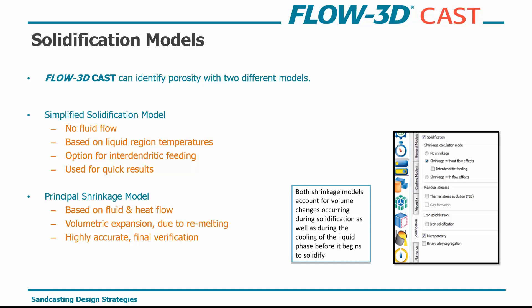Once we're happy with that design, we move to the principal shrinkage model. This is based on fluid and heat flow and takes into account volumetric expansion when material remelts within your mold. Both shrinkage models account for volume changes during solidification as well as during cooling of the liquid phase before it begins to solidify, so we do solve for liquid-to-liquid volume changes during the filling process.